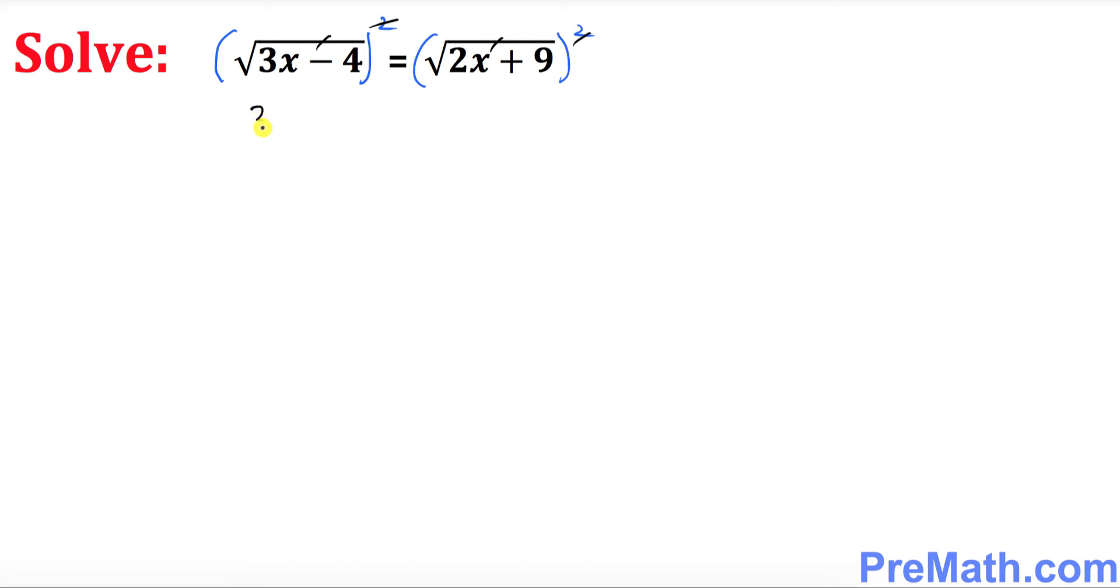This square and square root they undo each other, likewise this undo each other. So we got 3x minus 4 equals to 2x plus 9. So far so good.